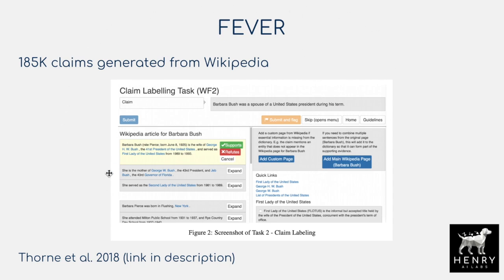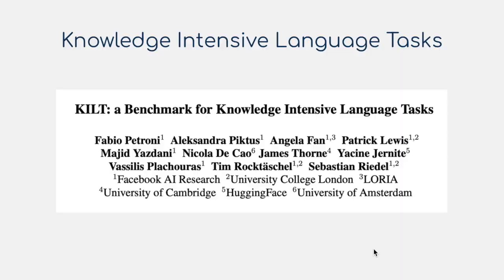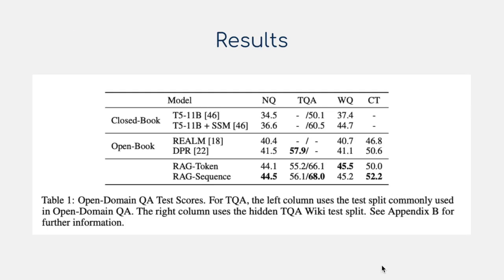The FEVER dataset contains 185,000 claims generated from Wikipedia, where human annotators sample some text from Wikipedia, devise a claim — like 'Barbara Bush was a spouse of a United States president during his term' — that is supported or refuted by the document. For further reading on these kinds of datasets, the authors recommend the KILT benchmark for knowledge-intensive language tests. The results compare RAG-token and RAG-sequence models — two different ways of incorporating latent document Z into BART generation — against the REALM approach that continually rebuilds the document index, their prior Dense Passage Retrieval paper, and a closed-book T5 model with 11 billion parameters.